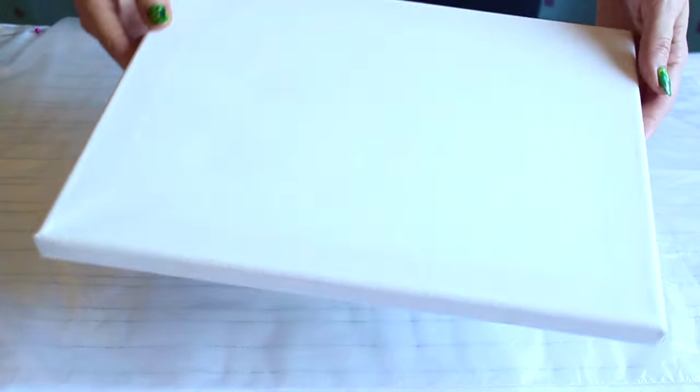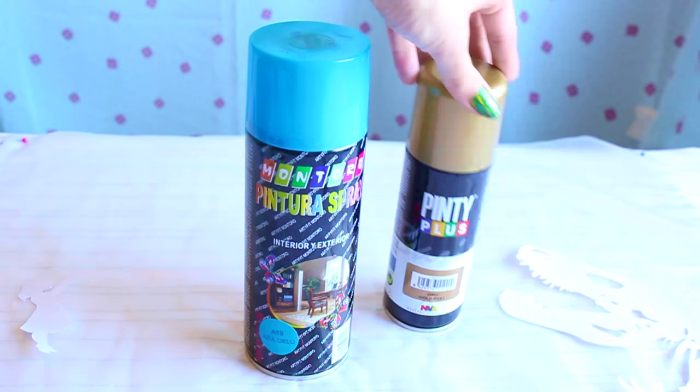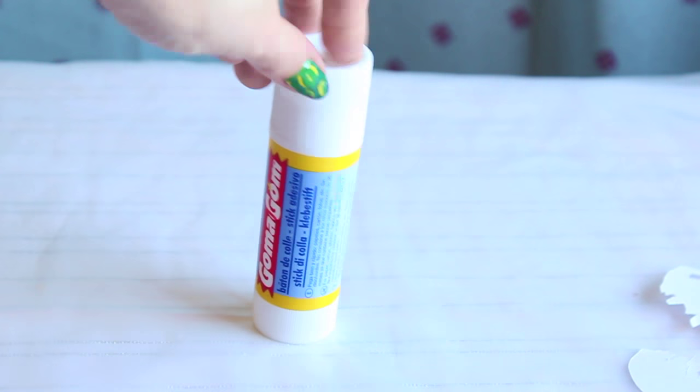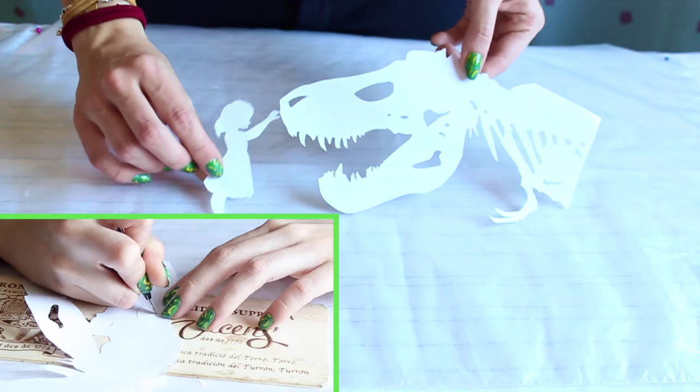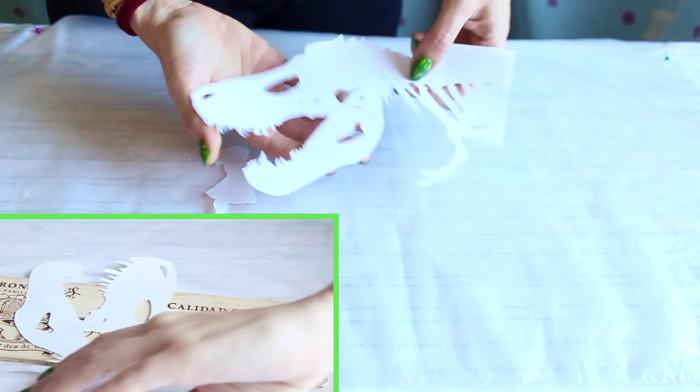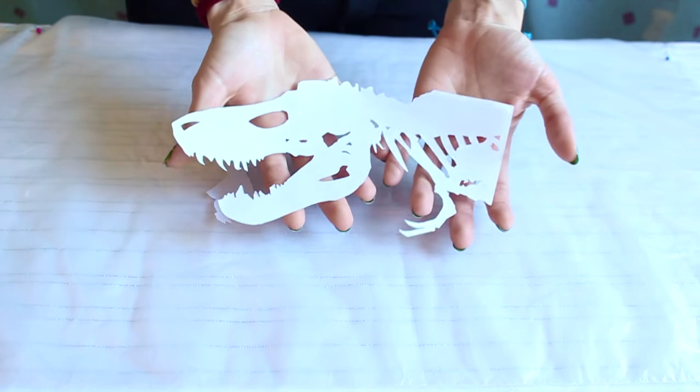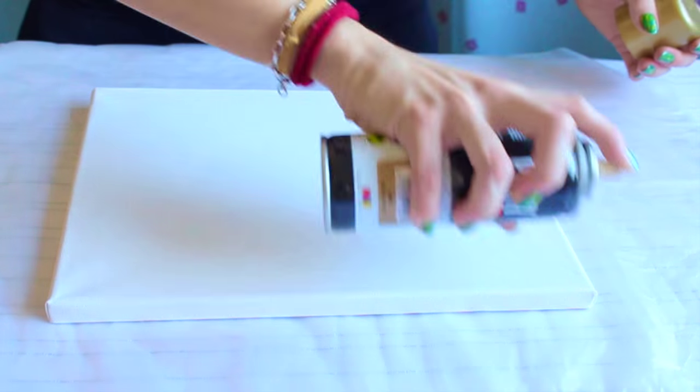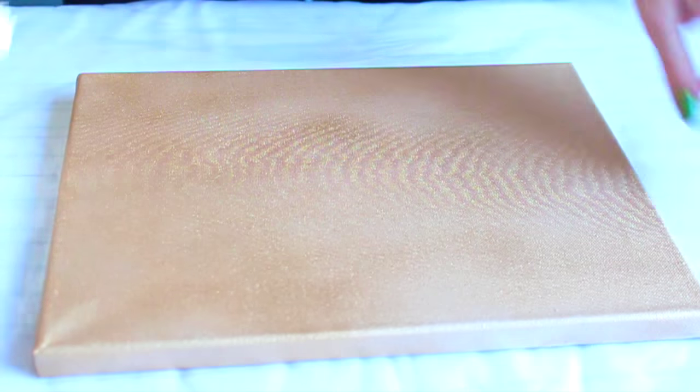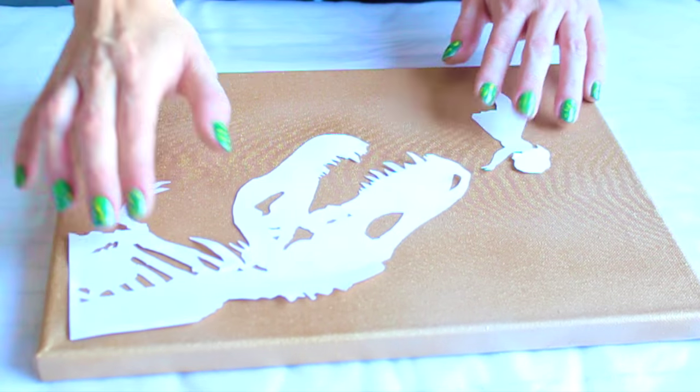For this Jurassic canvas, you will need a canvas, two different color sprays, some glue, and the shape you want to put on it. Just print the template on paper, and with patience and an X-Acto knife, cut the shape and the holes. On the canvas, we first need to create the base color, so with the lighter spray, we're going to give it an even coat all over the canvas and then let it dry.